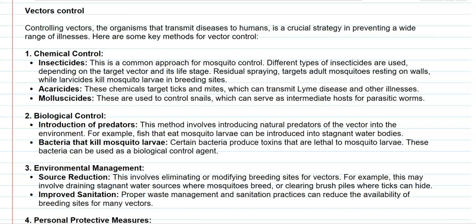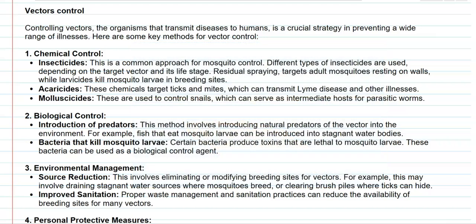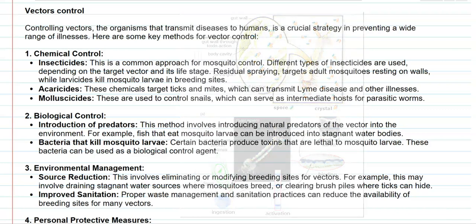The next category is biological control methods for vectors. Introducing certain predators associated with the vectors can solve the problem. For example, introducing fish into stagnant water bodies can successfully kill or eat mosquito larvae, thereby eliminating mosquito-based disease spread. Bacteria can also be used to kill mosquito larvae — for example, Bacillus sphaericus is a bacterium that produces a potent toxin lethal to mosquito larvae. Spreading this bacterium in water bodies can reduce the vector-borne population by killing the larval form of mosquitoes.